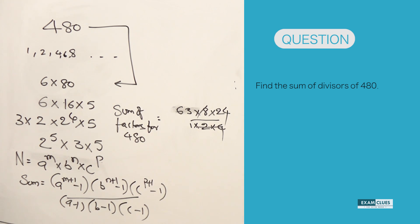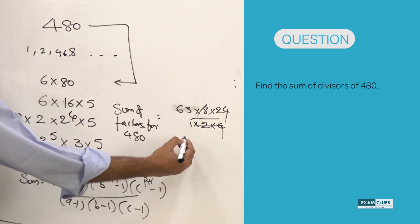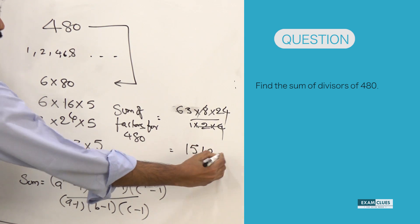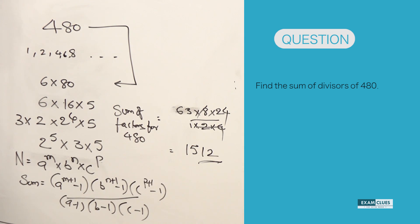So the answer is actually 63 into 24. So, 63 into 24, which is 1512. This is the sum of the factors of 480.